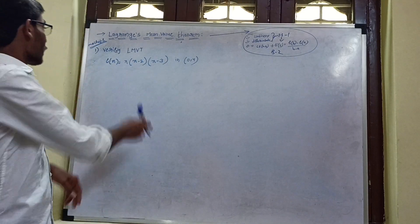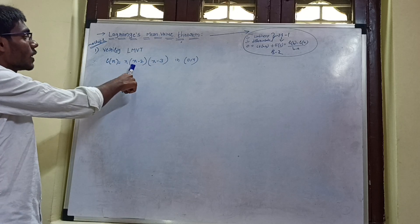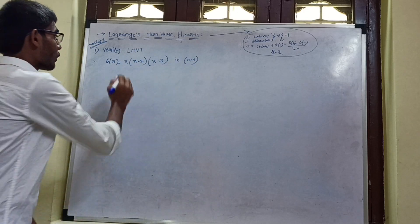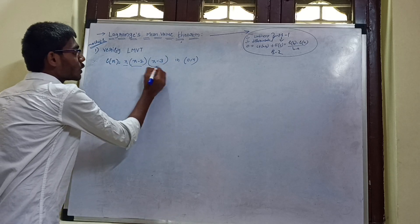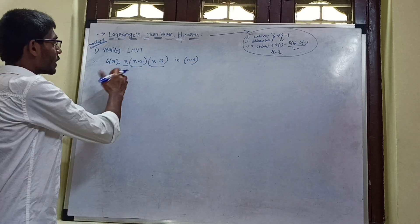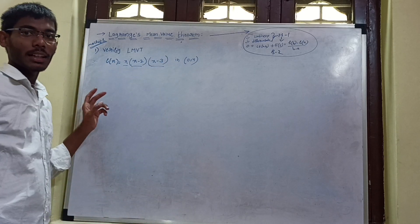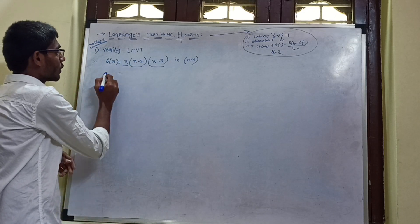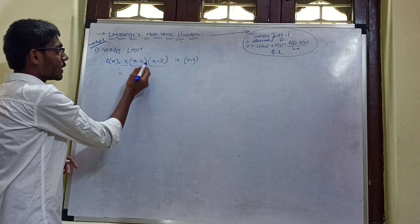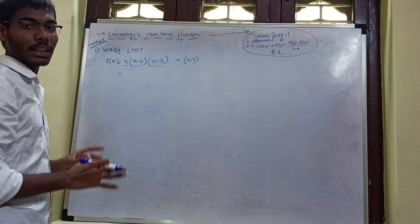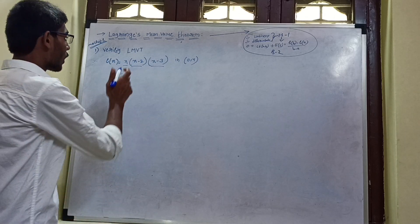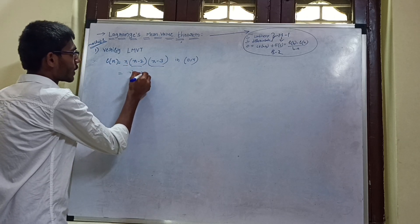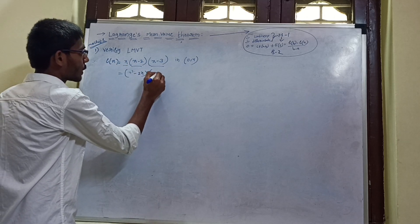Okay friends, this is the next question: verify LMVT for f(x) = x(x - 2)(x - 3) on the interval [0, 4]. So we have x multiplied by (x - 2) and (x - 3). We can expand this into a polynomial equation.